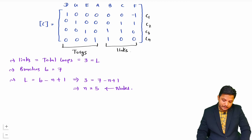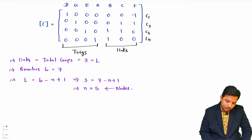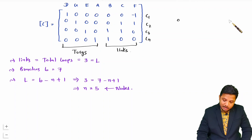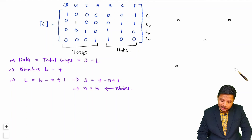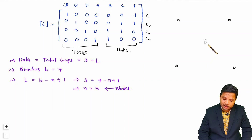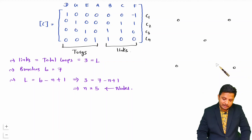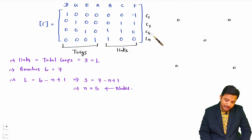Now when you have identified the total number of nodes, first of all you need to place the nodes. As 5 nodes are there, you should place one node at the center and 4 nodes on the vertices of a square. It will be convenient for you if you place them like this.